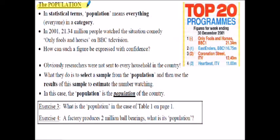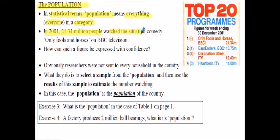The population - in statistical terms, the population means everything, or maybe everyone, in a category. So in 2001, 21.34 million people watched a situation comedy on Christmas. How was this figure achieved with confidence? Obviously the researchers were not sent to every household in the country to find out what people were watching.